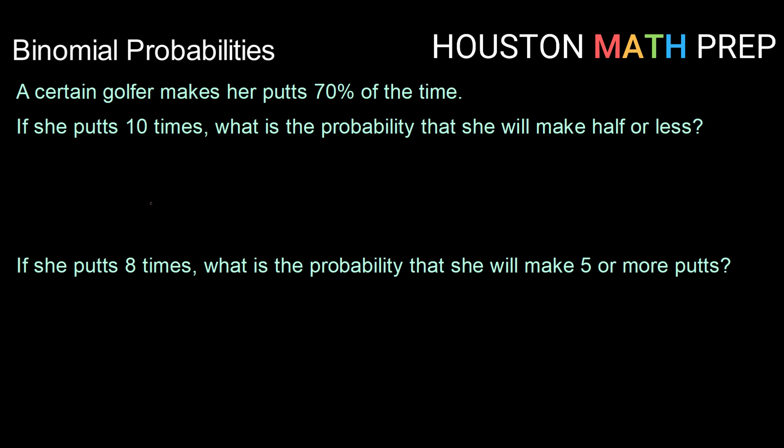So we can use our binomial probability distribution or our binomial cumulative distribution function here, depending on what our situation is. If she putts 10 times and we want to know the probability that she will make half or less, half of 10 would be 5. So we could think of that as 5 or less.